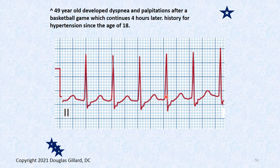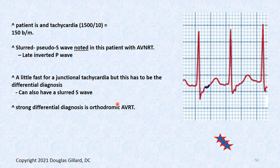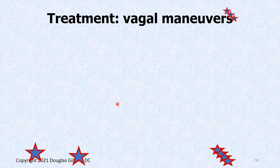Another case: a 49-year-old with dyspnea and palpitations after a basketball game, continuing for four hours. History of hypertension. Heart rate is about 150 beats per minute. No squiggly baseline so it's not atrial fibrillation. No clear P wave visible before the QRS, but a notched appearance suggests a P wave embedded in there. Again, 150 is a little fast for junctional tachycardia. It's either AVRT or AVNRT — quite hard to tell the difference. Because AVNRT is more common, the best diagnosis is AVNRT.